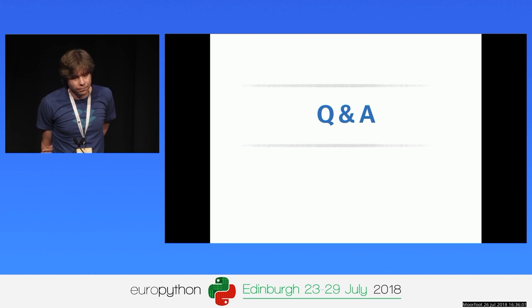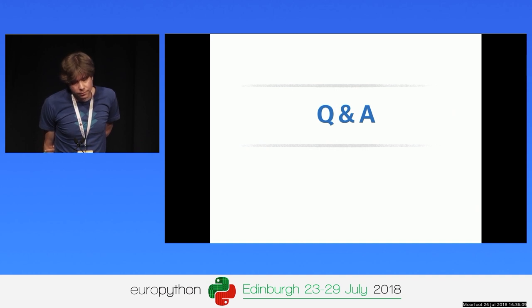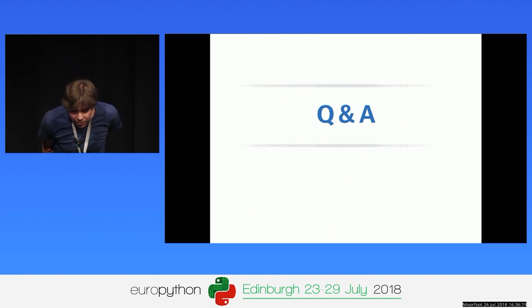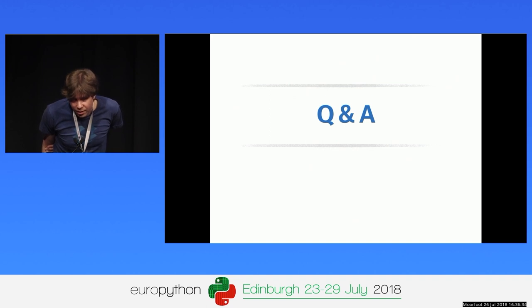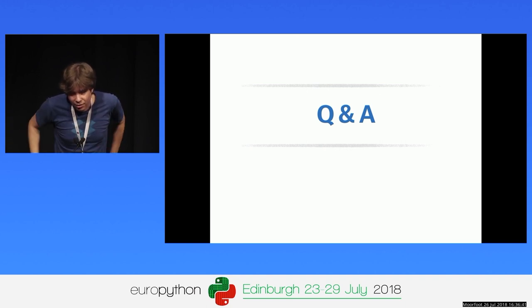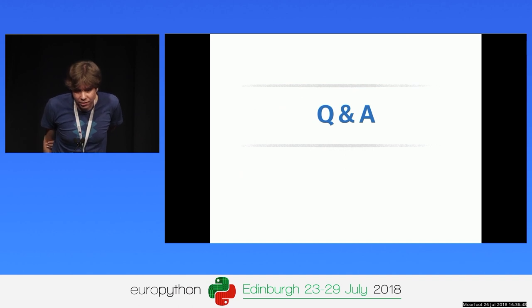Question: What if a library supports multiple dependency versions where a type changes between versions? You can only have one version at a time, but mypy supports pip-installable stub packages via PEP 561, so you can have multiple versions of a stub package corresponding to different versions of the library. Just pin the correct version of the stub package and you get correct type checking.